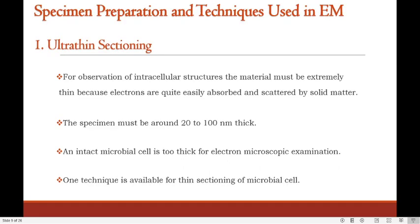Now let's talk about how a specimen is prepared using techniques in electron microscopy. The first technique is ultra-thin sectioning. For observation of intracellular structures, the material must be extremely thin because electrons are quite easily absorbed and scattered by solid matter. The specimen must be around 20 to 100 nanometers thick.